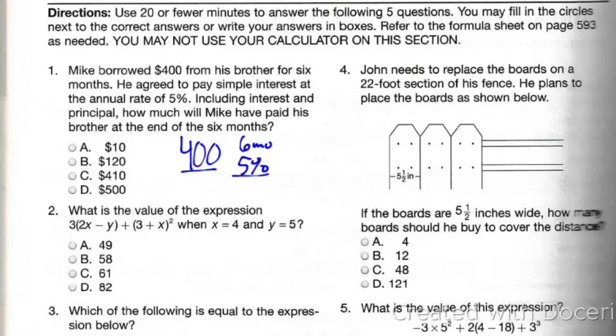$400 is the principal, that means your starting amount. And 5% is your rate, but it says annual. Annual means year. So this is 5% in a year, but he paid it in 6 months. So we got to do half of that. So half of 5% is 2.5%.